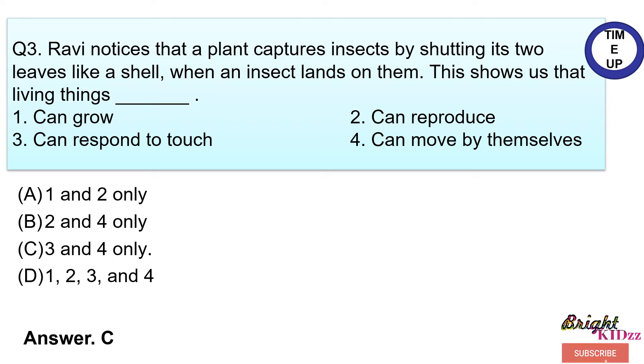Answer C. This shows that since the plant is being touched by the insect, because of which plant responded, so the answer is 3. This shows that living things can respond to touch and can move by themselves, both.